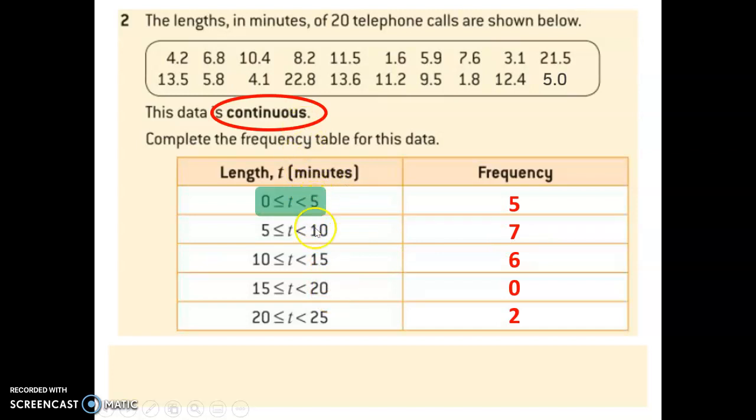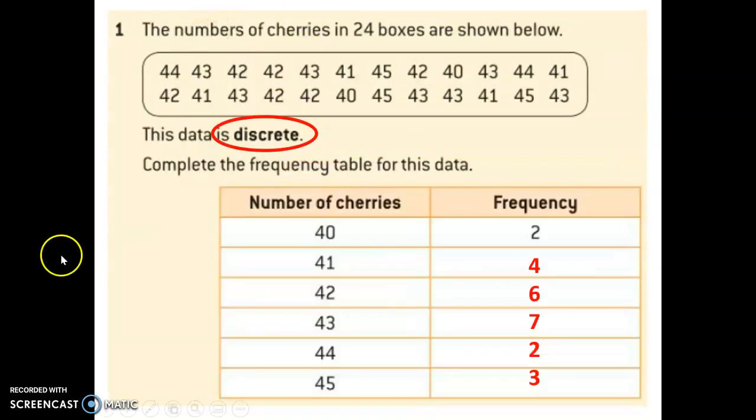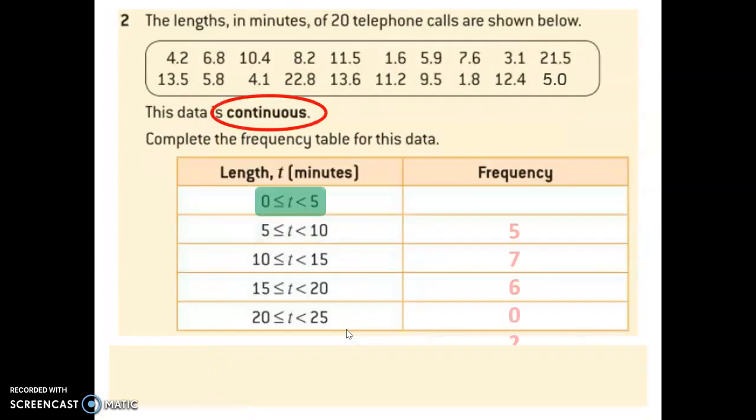Know that continuous data will be represented like this, because by having this range of values, for example 5 to 10 minutes, it implies the value can be any value between 5 and 10, any decimal value, any fractional value. That is continuous data. Whereas, discrete data can only take on certain values, and they are specified there.